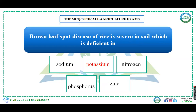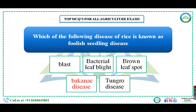Brown Leaf Spot disease of rice is severe in which type of nutrient-deficient soil — sodium, potassium, nitrogen, phosphorus, or zinc? Brown Leaf Spot was responsible for the Great Bengal Famine in 1943. It mainly occurs in soils deficient in potassium, which is the correct macronutrient answer.